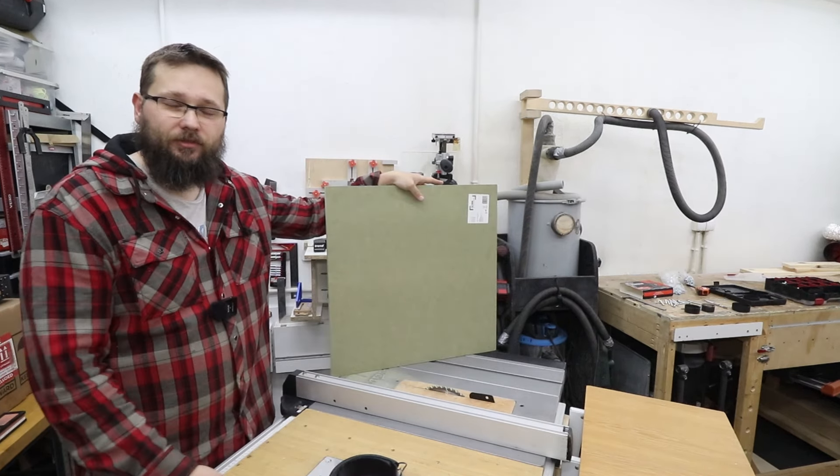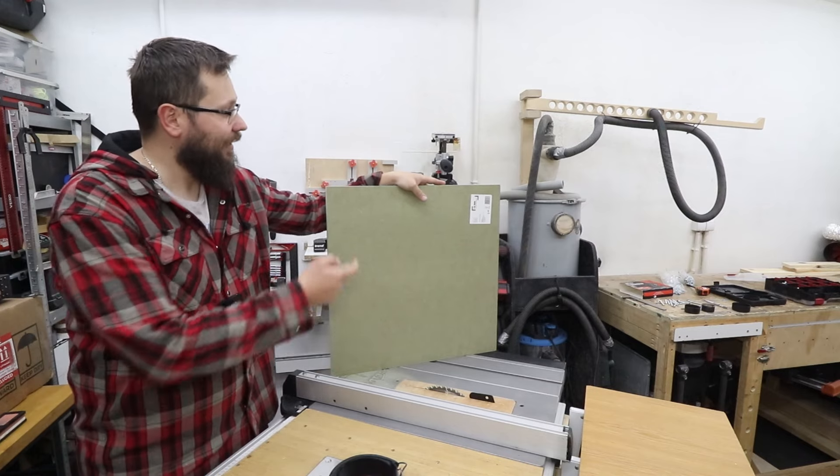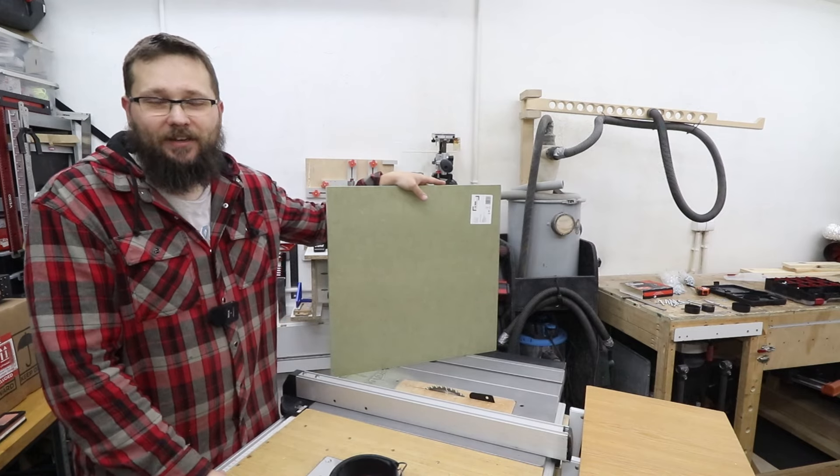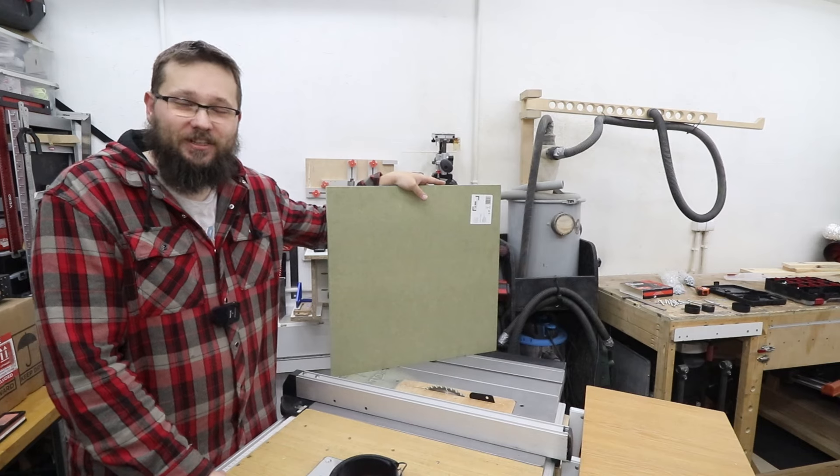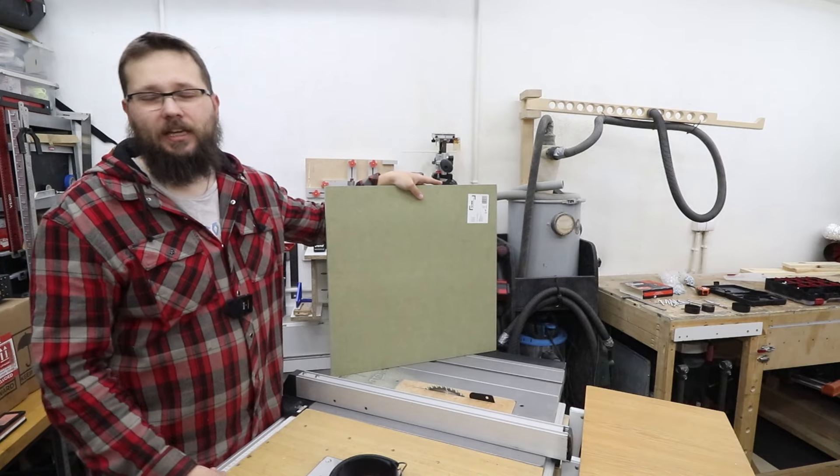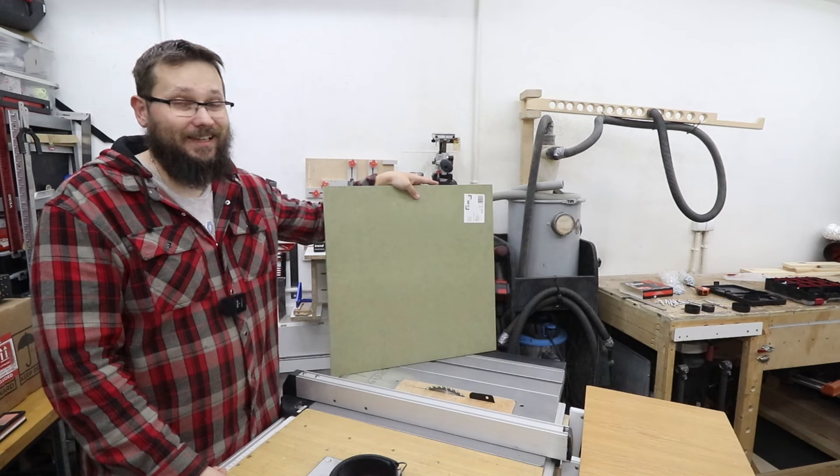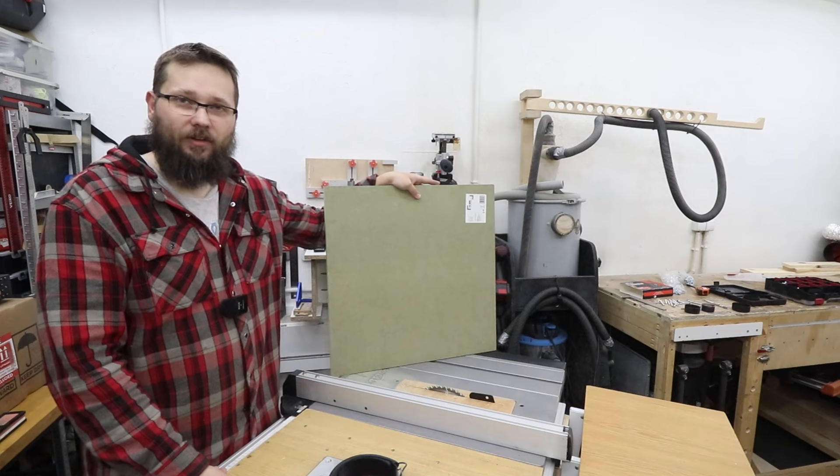The material I'm going to be using for today's jig is 18 millimeter MDF. Well actually this is the MRMDF, which is the moisture resistant. However if you've got plywood you can use that, but the thickness is the key. 18 millimeters—if you have a sheet material that's 18 millimeters it will be fine.